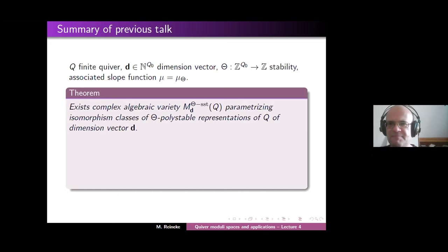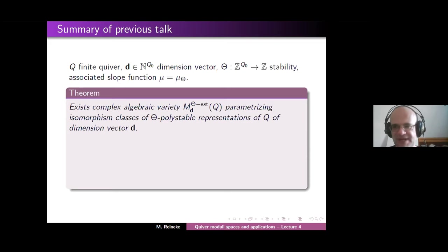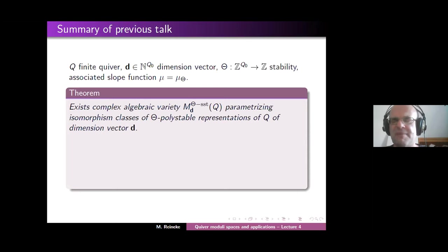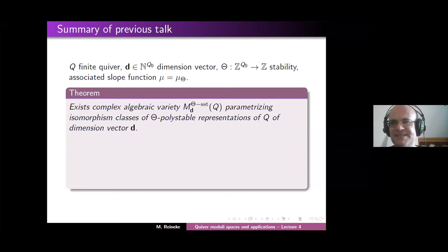Going back to the motivation from last week, our first aim is somehow fulfilled. We started with hard linear algebra problems, and we wanted to define moduli spaces encoding all the continuous parameters in this classification problem. Now we have succeeded. We defined these algebraic varieties. But of course it is more interesting to now really start analyzing the geometry of these moduli spaces, with the hope of getting back to the original linear algebra problem.